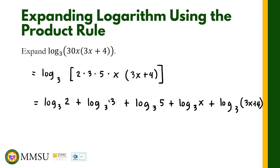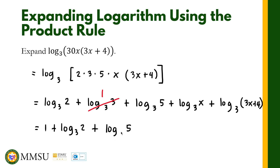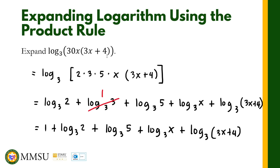We can still simplify this further. The logarithm of 3 in base 3 is equal to 1, as stated in the basic logarithmic properties — when the argument equals the base, the result is 1. Therefore our final answer is: 1 plus log base 3 of 2, plus log base 3 of 5, plus log base 3 of x, plus log base 3 of (3x + 4). That's how we use the product rule for logarithms. For the next video, I am going to talk about the quotient rule for logarithms.